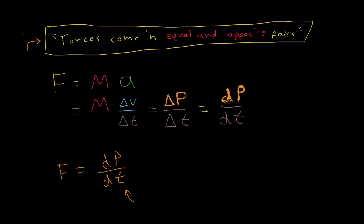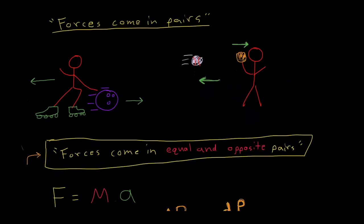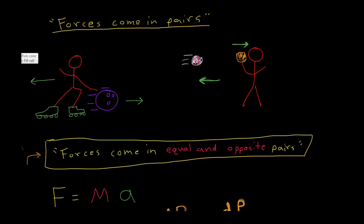So if we go up and look at this bowling ball again, we see that maybe this bowling ball gains some momentum in this direction. Delta p. It's momentum changed in this direction.